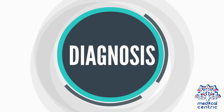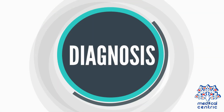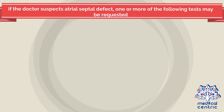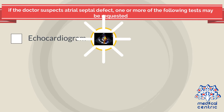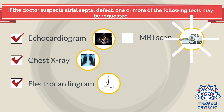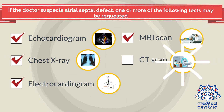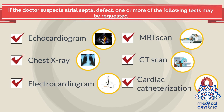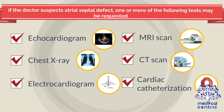If the doctor suspects atrial septal defect, one or more of the following tests may be requested: echocardiogram, chest x-ray, electrocardiogram, MRI scan, CT scan, and cardiac catheterization.